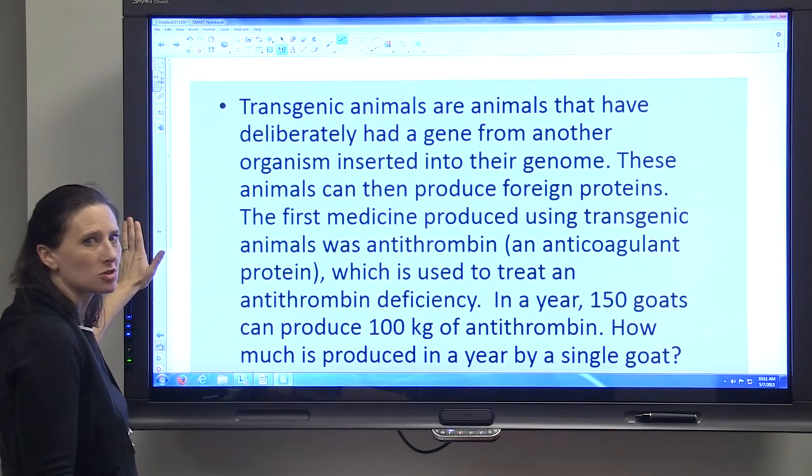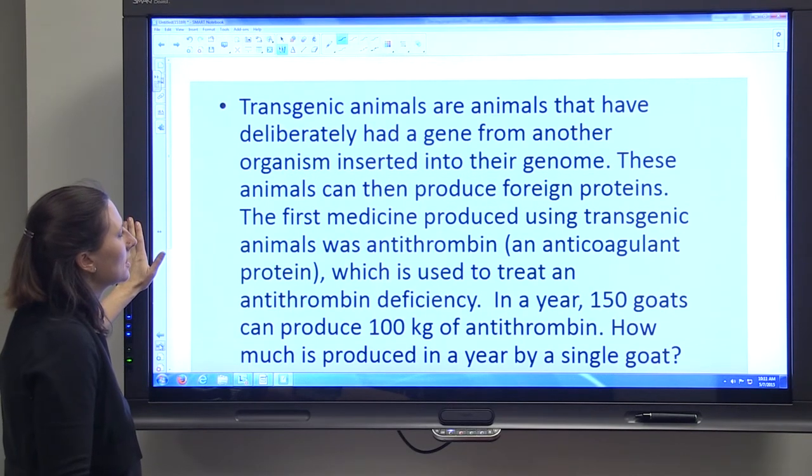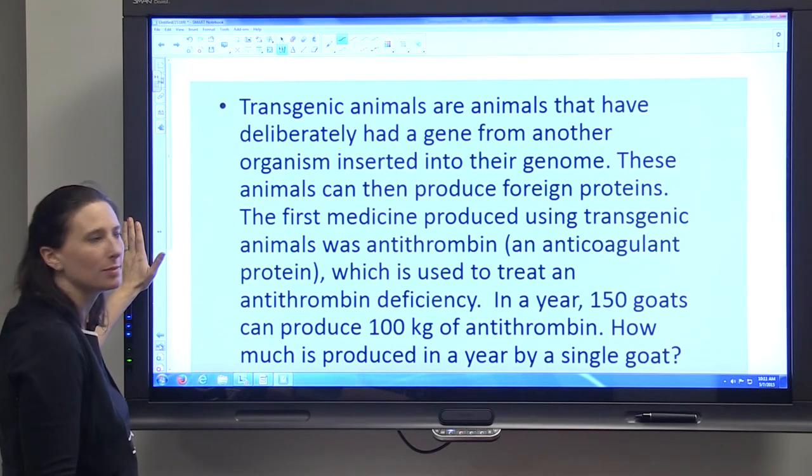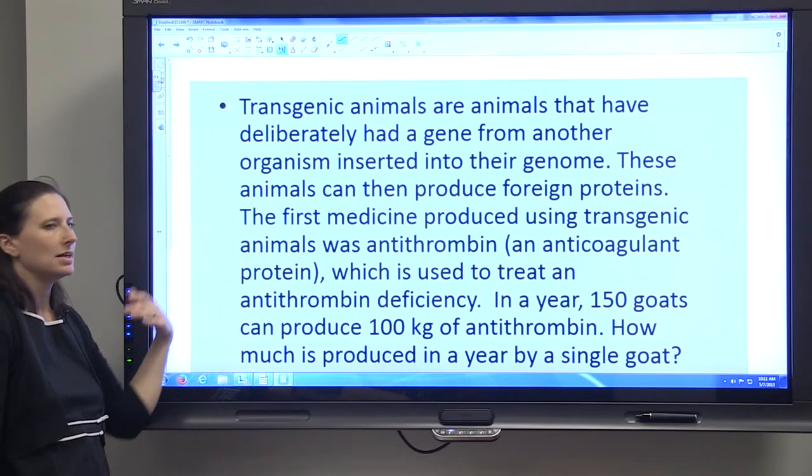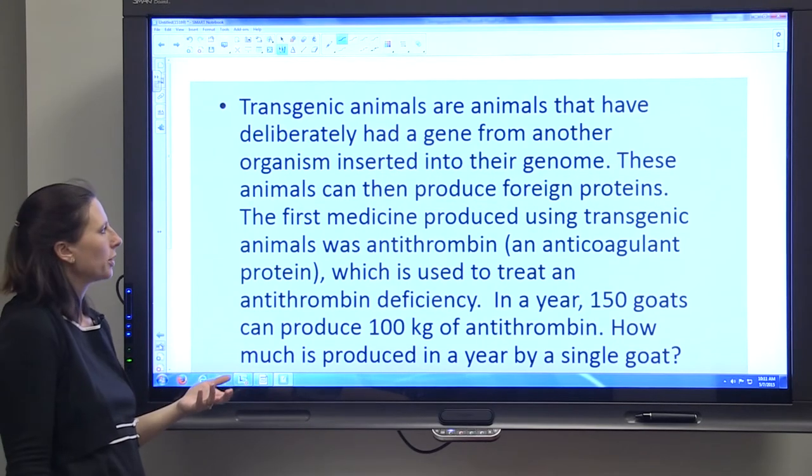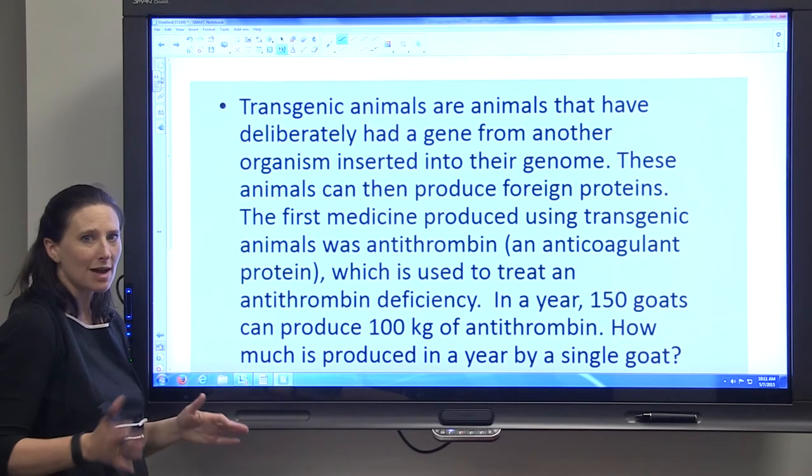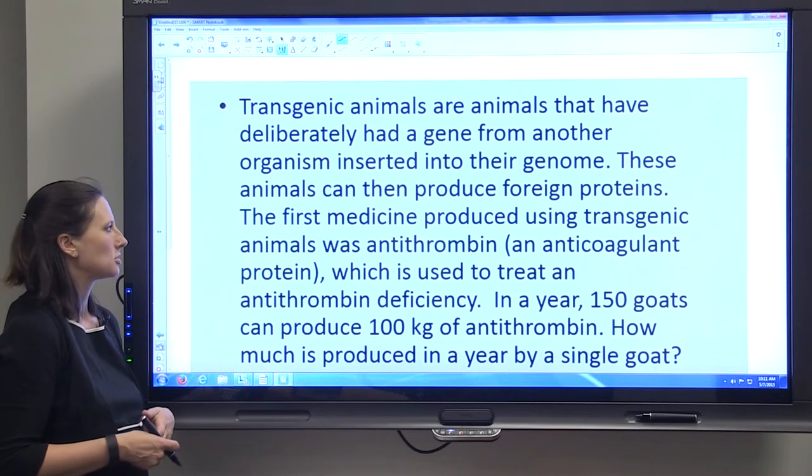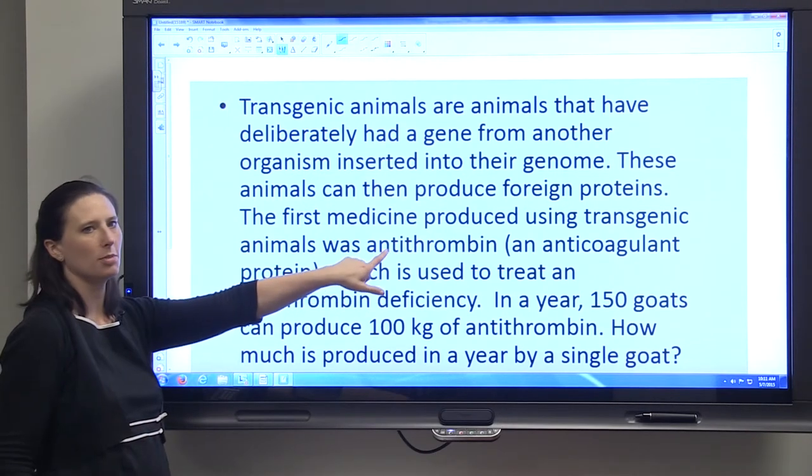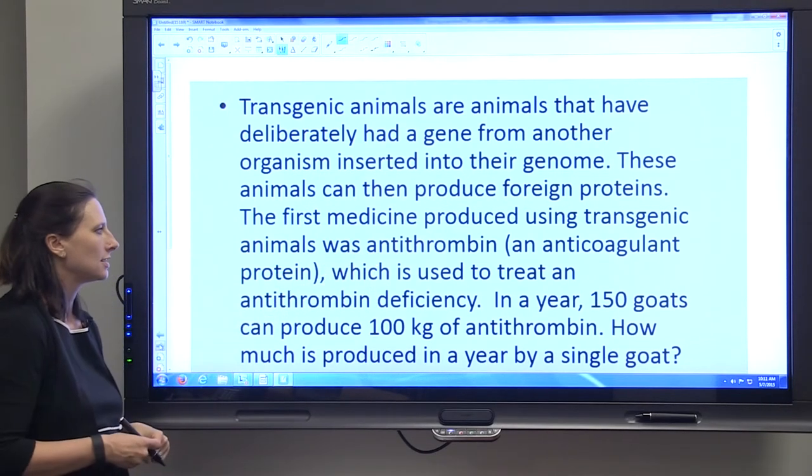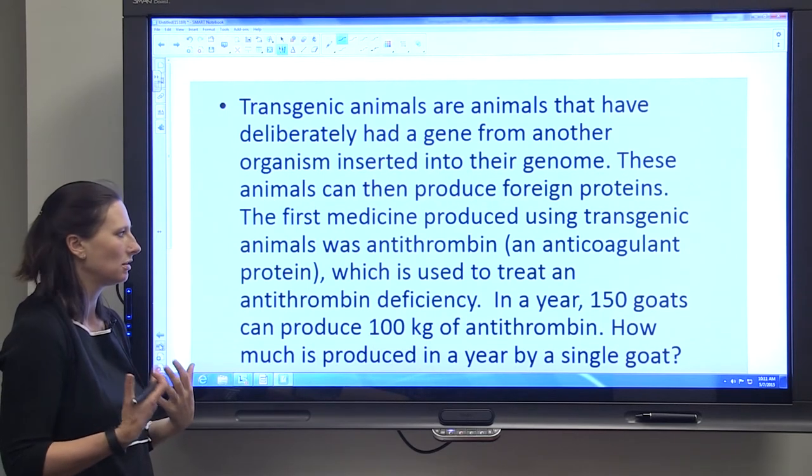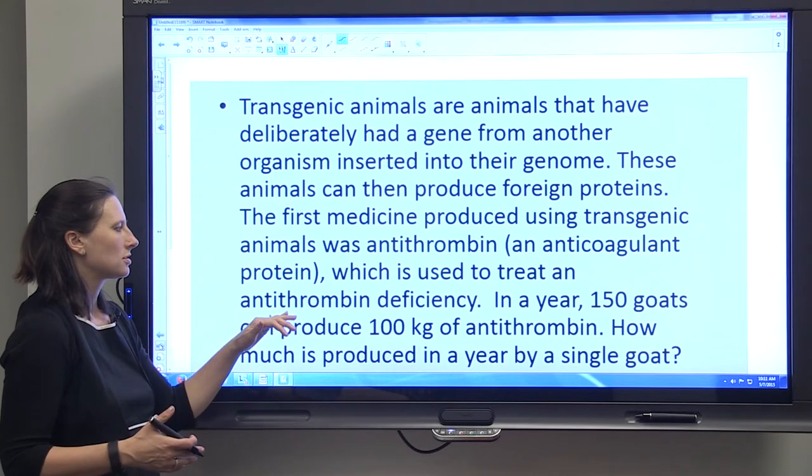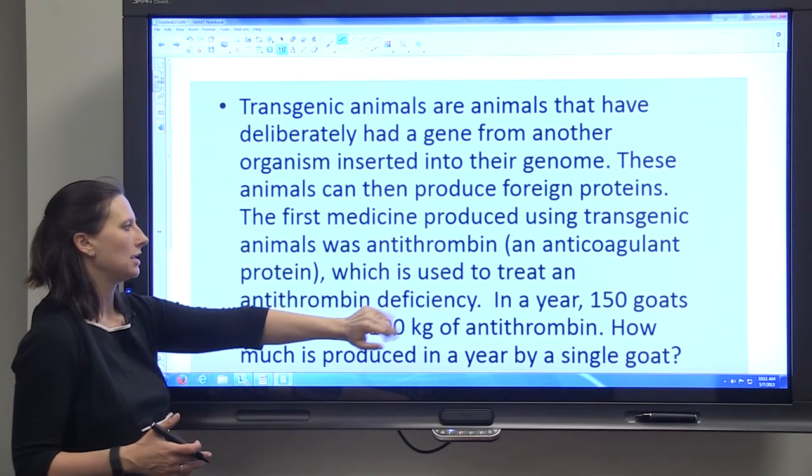Transgenic animals are animals that have deliberately had a gene from another organism inserted into their genome. These animals can then produce foreign proteins. The first medicine produced using transgenic animals was antithrombin, an anticoagulant protein, which is used to treat antithrombin deficiency.